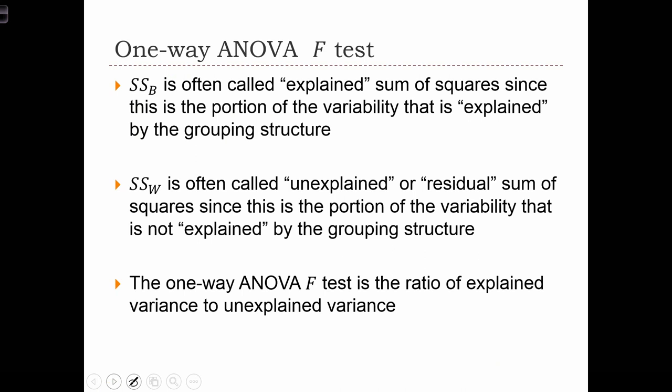Now, in order to test the ANOVA statistic, we're going to use something called an F-test. And the F-test is the ratio of explained variance to unexplained variance. The explained variance is what we are going to represent with the between group sum of squares. And this is the portion of the variability that is explained by the grouping structure.